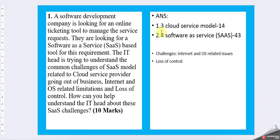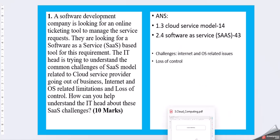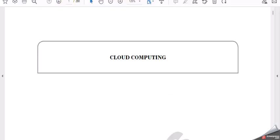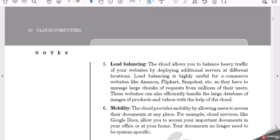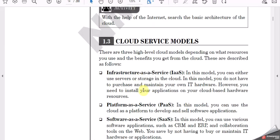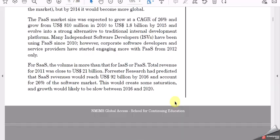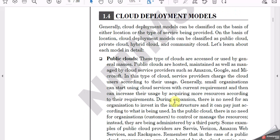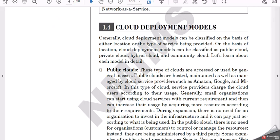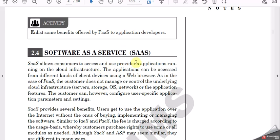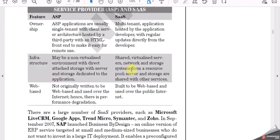For the introduction part, you can mention what cloud services are — page number 14 from chapter 1. Then for Software as a Service, there is some information there on page 14. You can get a little information on Software as a Service, and then we have more detail about SaaS a bit further.